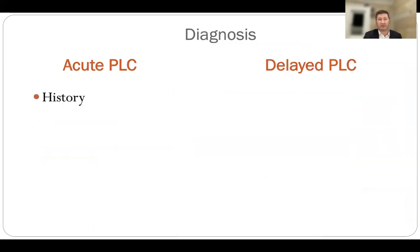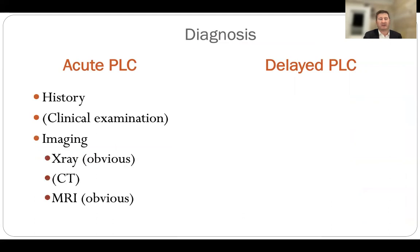Diagnosis of acute posterolateral corner injury comes from the history, clinical examination, and imaging. In the acute high-energy injury it's usually pretty clear if the posterolateral side has been disrupted — look for bruising and assess coronal and rotary stability. X-ray after dislocation may be obvious, but if reduced can be normal; look for avulsion fractures around the posterolateral corner, particularly the fibula head. MRI scan is the workhorse and in acute cases disruptions will be easily identifiable.